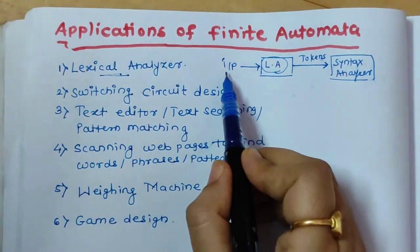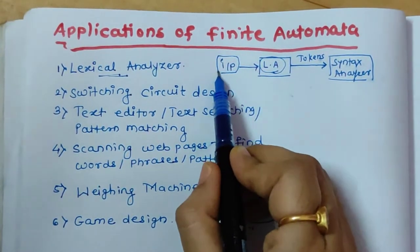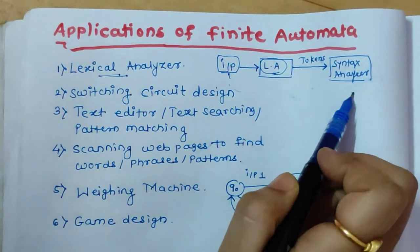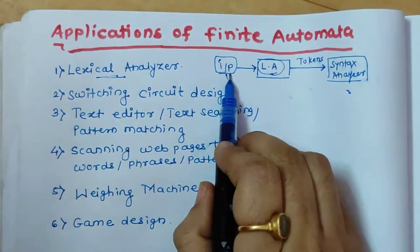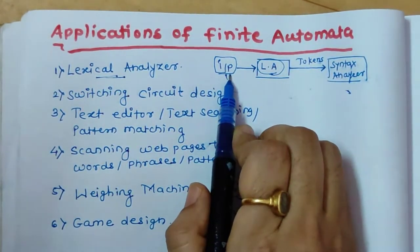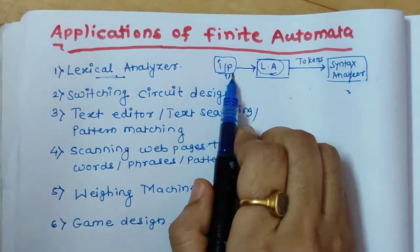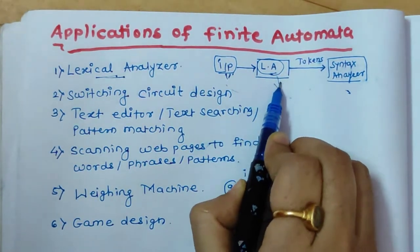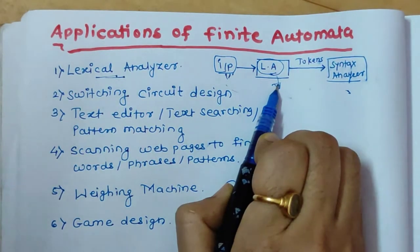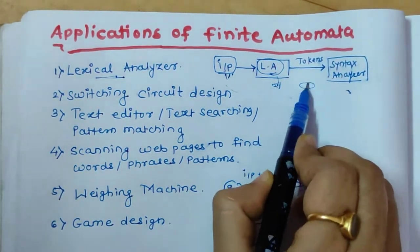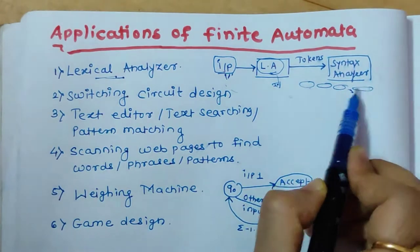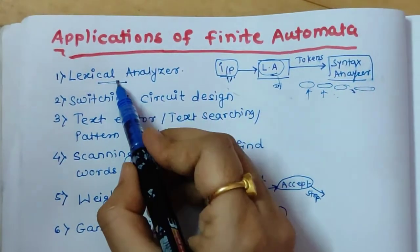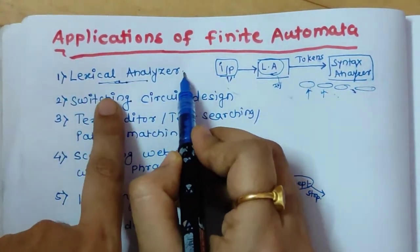Lexical analysis is: whatever input you provide to the compiler, it is in high level language and it is to be converted to machine language. Before that, the input is to be processed. To process the input, the lexical analysis step includes analysis of tokens from the language. Tokens are nothing but words that are analyzed as symbols or tokens. This is the first step — lexical analysis.